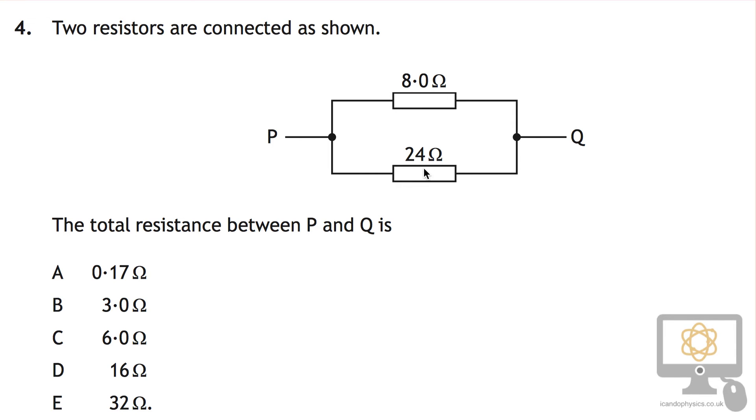If they were in series you would just add them up, 24 plus 8 is 32, which is why option E is available to us.